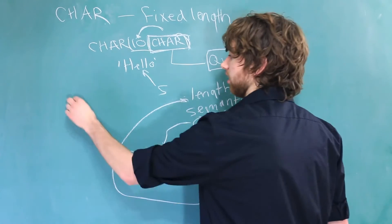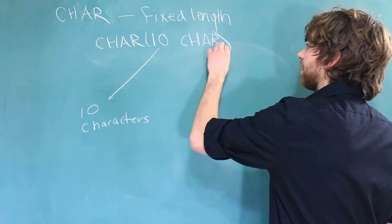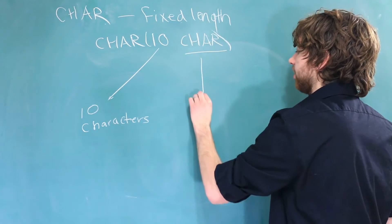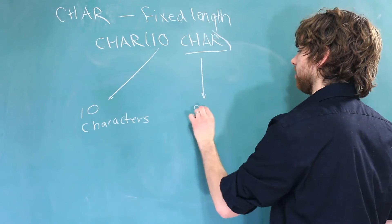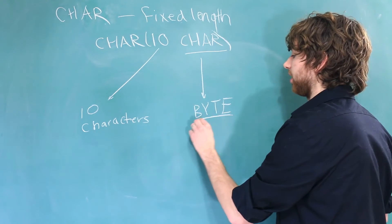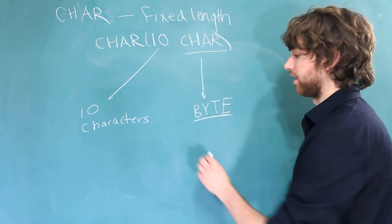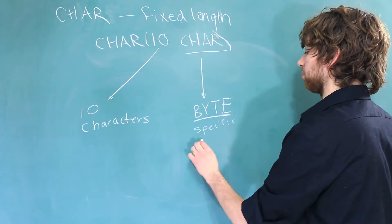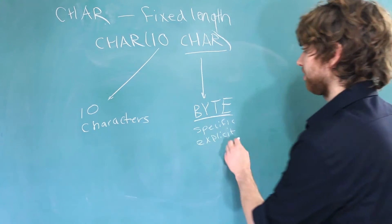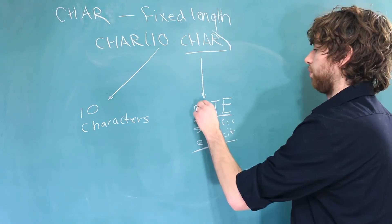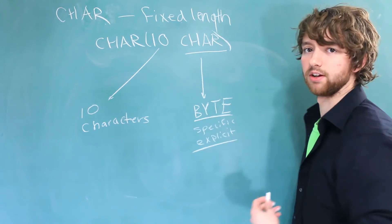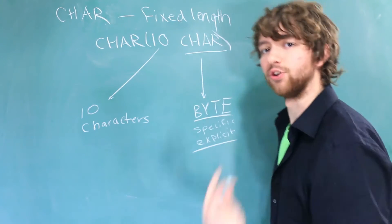In this situation we are saying 10 characters. Now if we don't put this char here, the default is actually byte. If you want, you can throw in that byte keyword. That way you can be very specific, or a better word would be explicit. So if you explicitly do something, you are putting it there even if it's not necessarily needed. You're giving extra information.